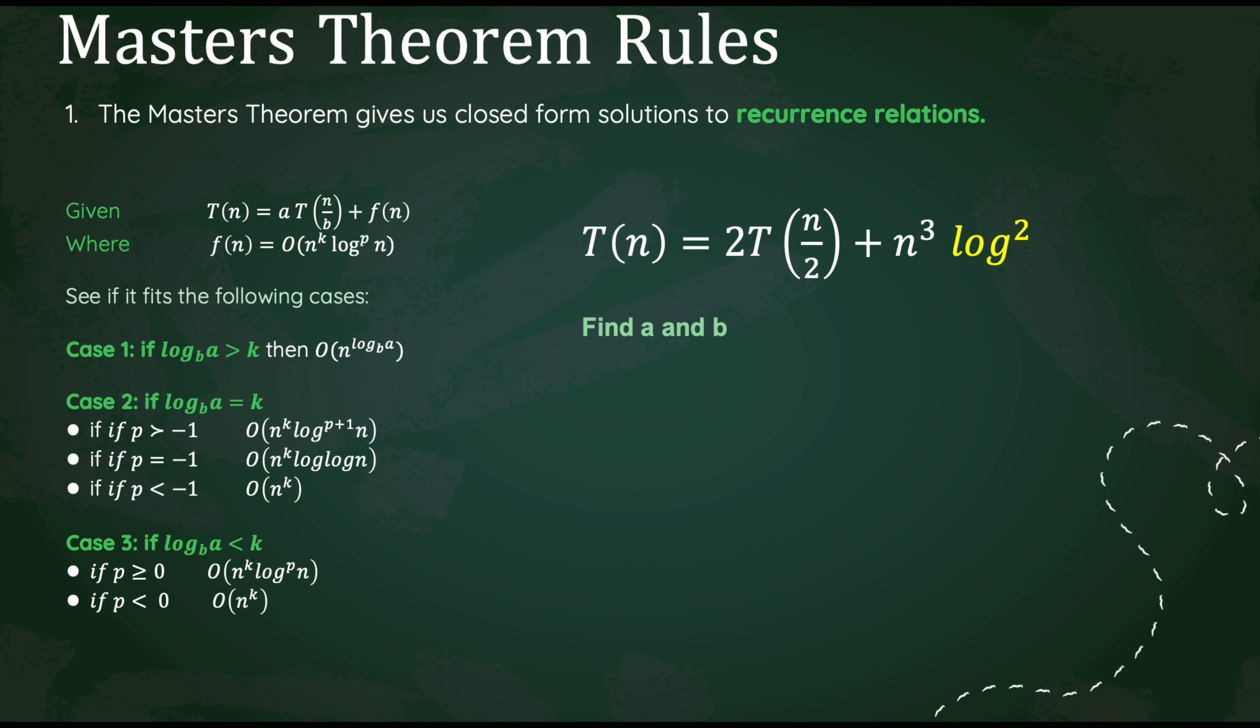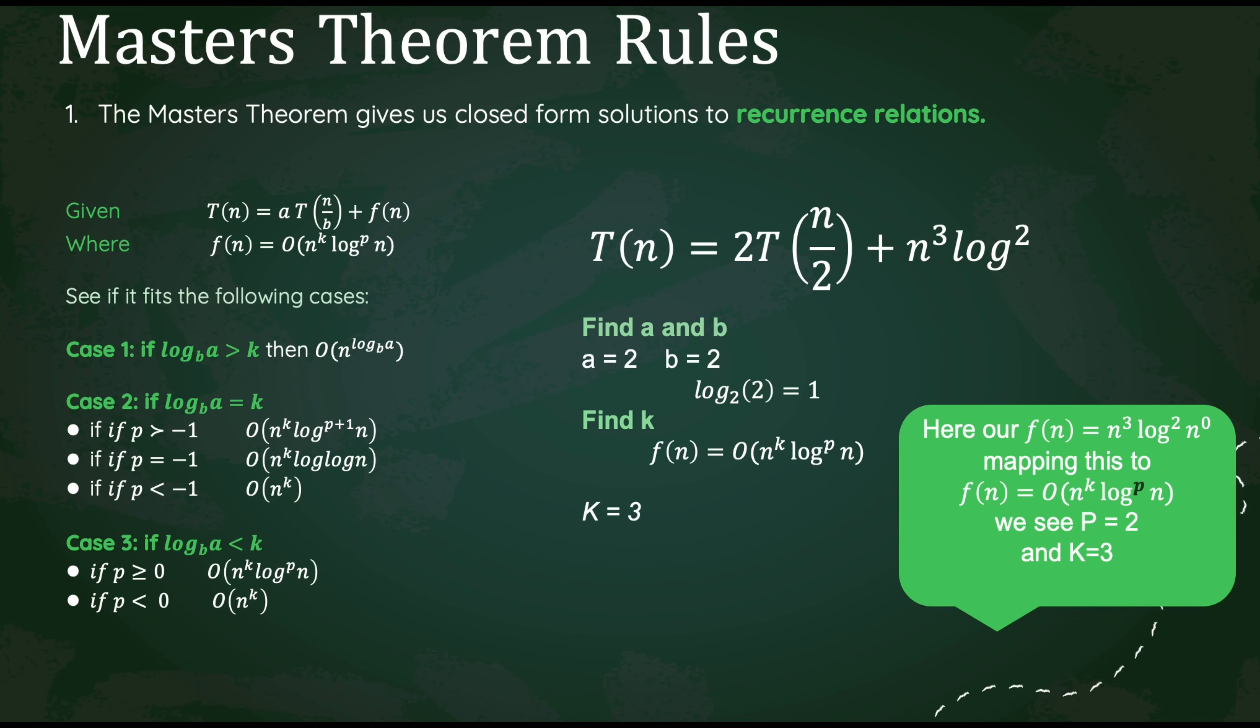Our final problem reads, T(n) equals 2T(n/2) plus n cubed log squared. Here we see that our f(n) does contain a log. We find our a and b. a equals 2 and b equals 2. We plug that into log base b of a and we get 1. Now let's find our k value. Here we see that our f(n) is equal to n cubed log squared times n to the 0 power. We can see that our p is whatever log is being raised to. In this case, log is being raised to the second power. And our k, once again, is whatever n is being raised to. p equals 2 and k equals 3.